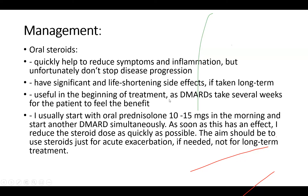Steroids are very useful in the beginning of treatment because other drugs take several weeks to show benefit. What I usually do is start oral prednisolone 10 to 15 milligrams in the morning and simultaneously start a disease-modifying agent. As soon as this kicks in and starts to have an effect, I reduce the steroid dose as quickly as possible — from 15 down to 10, then 7.5, going down slowly. The aim should be to use steroids just for acute exacerbation and not for long-term treatment.